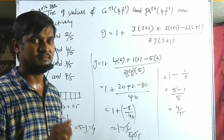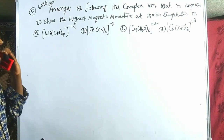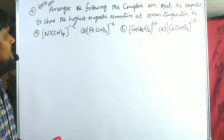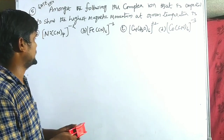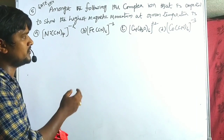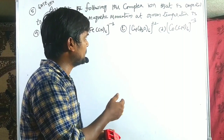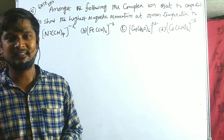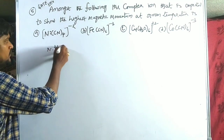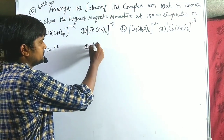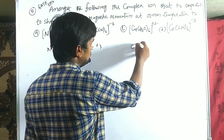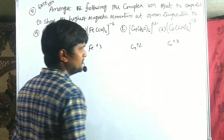Now we solve a problem from GATE 2014: among the following complex ions, which is expected to show the highest magnetic moment at room temperature? The options are: Ni(CN)₄²⁻ (Ni²⁺, d⁸), Fe(CN)₆³⁻ (Fe³⁺, d⁵), Cu(H₂O)₆²⁺ (Cu²⁺, d⁹), and Co(CN)₆³⁻ (Co³⁺, d⁶). All have strong field ligands except Cu²⁺ with water.